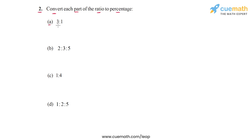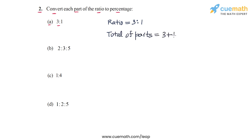In part A, the ratio is 3 is to 1. So the total of the parts in this ratio will be 3 plus 1, or 4. Now we can express each part of the ratio as a fraction of the whole, and hence as a percentage of the whole. The first part of the ratio corresponds to the number 3. As a fraction of the whole, we can write this as 3 by 4.